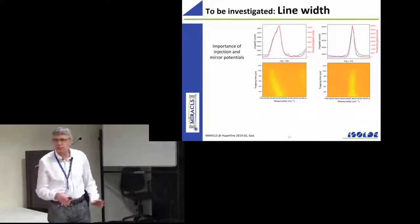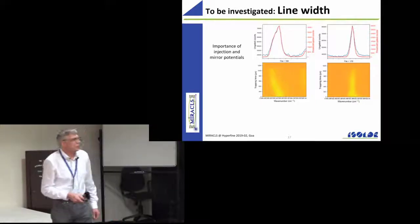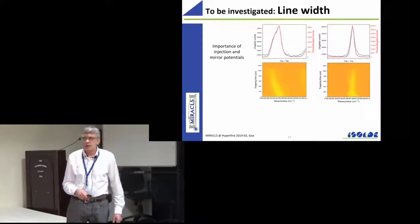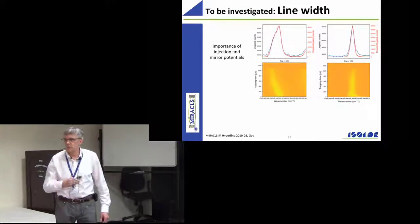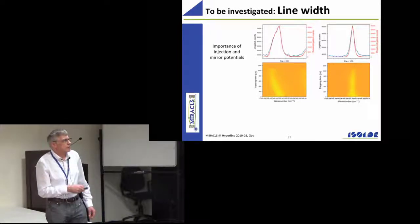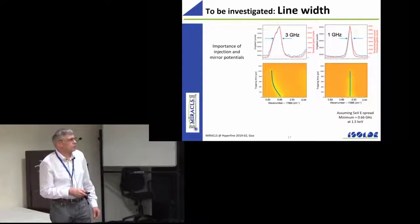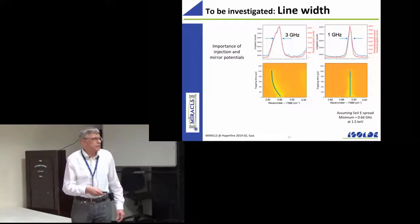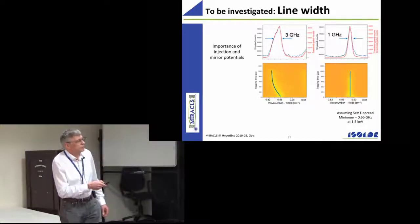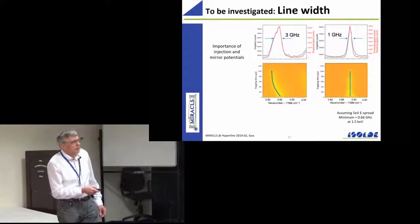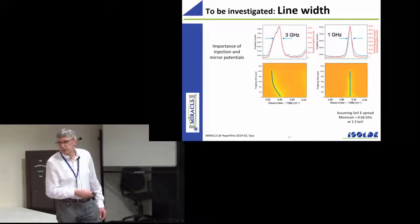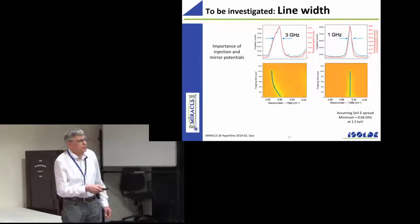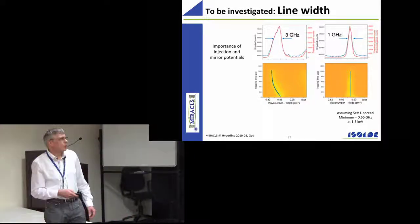There are some things we still are working on. For example, you have to tweak the potentials of the trap in order to have the ions go through nicely. This is if you haven't yet tweaked it, then you can see that the resonance frequency is moving. So if you add up all the signal that you have as a function of the laser frequency, you get something like this. After tweaking, this is what you can achieve.